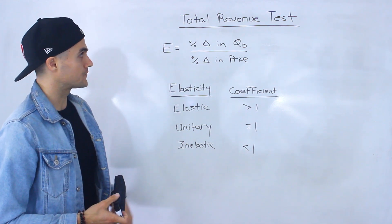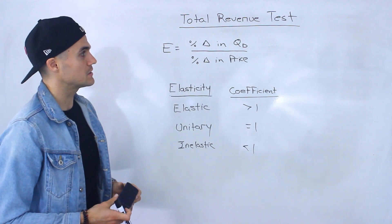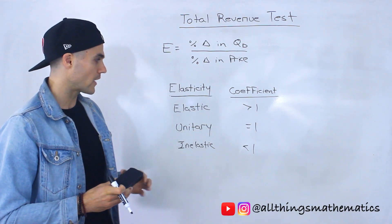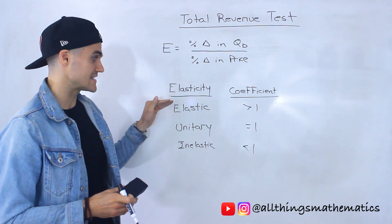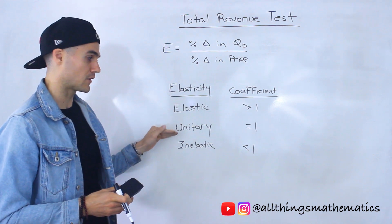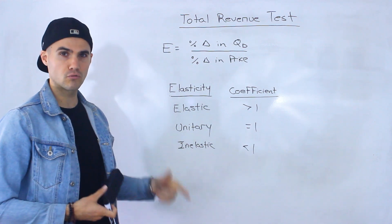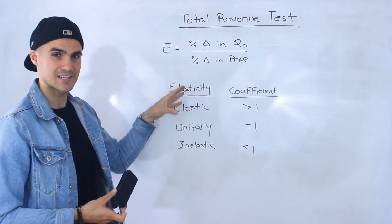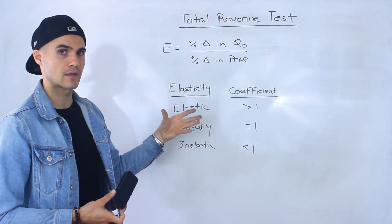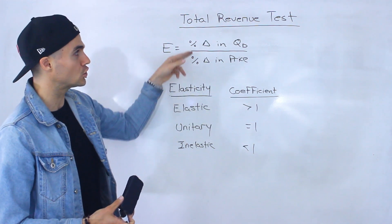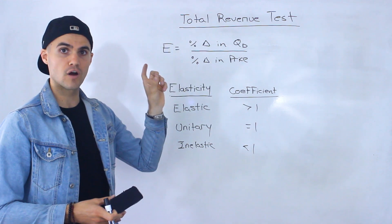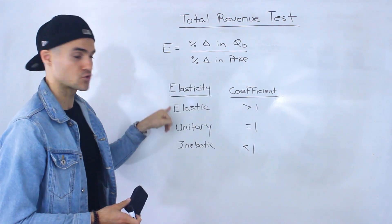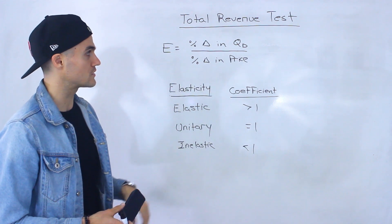What the total revenue test is going to be is actually another way to figure out whether a good or service is elastic, unitary, or inelastic. I'm going to go over a couple of examples, but before doing the examples, I'm going to try to explain intuitively how this all works — how we can look at the total revenue from a producer's perspective to see which category a good or service falls into.